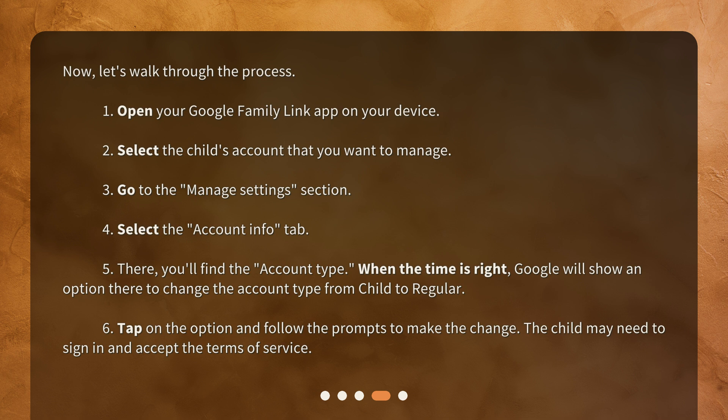There, you'll find the account type. When the time is right, Google will show an option to change the account type from child to regular. Step 6: Tap on the option and follow the prompts to make the change. The child may need to sign in and accept the terms of service.